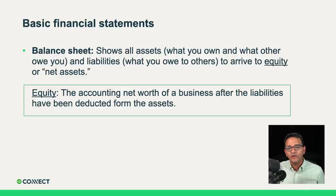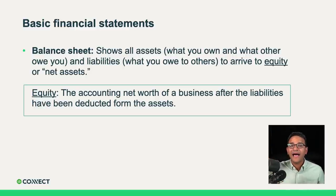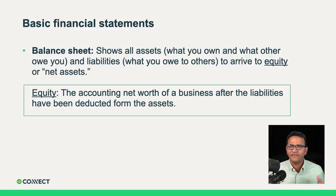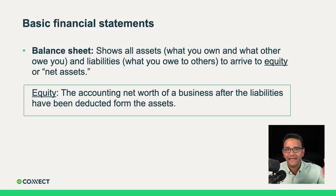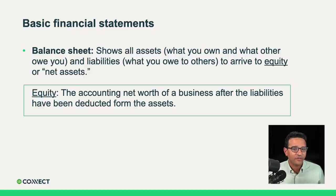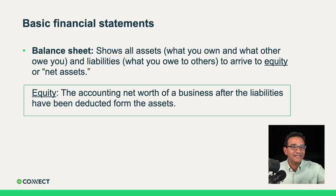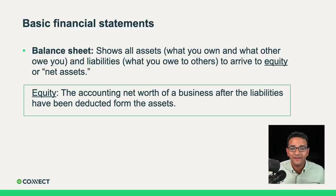The balance sheet shows your assets — what you own or what others owe you. Your liabilities — what you owe to others, so others can make claims on your assets. A typical example is a bank loan. Then we arrive at equity or net assets — the difference between assets and liabilities, also called the net worth or accounting net worth of the business. If you were to sell your business, the buyer will consider not just net assets but goodwill and brand value. But from an accounting perspective, the value is the assets minus liabilities equation.